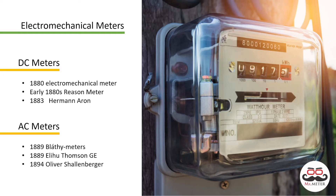The first official meter rolled out and installed in England was the Reason meter. After that, in 1883, the Herman Aaron meter was invented and installed, which was nearly the last of the DC meters.